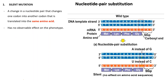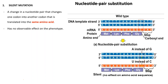For silent mutation, it involves a change in the nucleotide pair that changes one codon into another codon that is translated into the same amino acid, so it has no observable effects on the phenotype. For example, the DNA template of the wild type reads CCG (3' to 5').